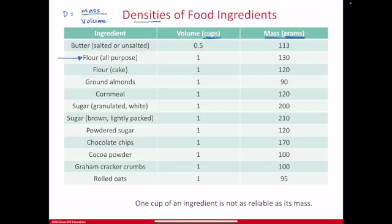We can compare flour, which has in one cup of flour 130 grams. But if you have one cup of chocolate chips, one cup of chocolate chips has a mass of 170 grams. So one cup of an ingredient is not as reliable as its mass.